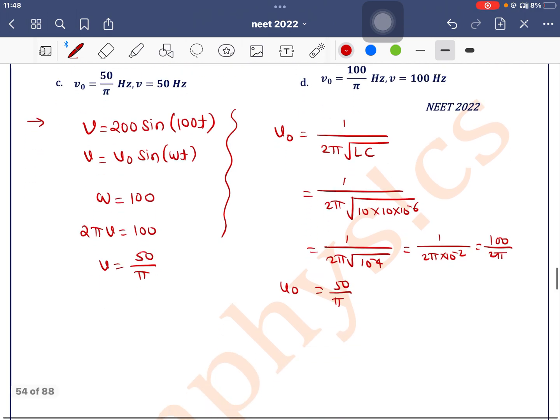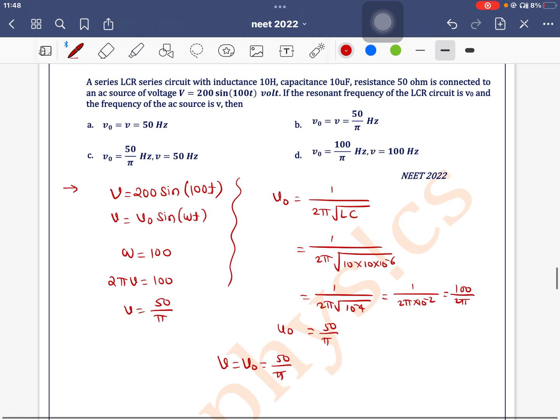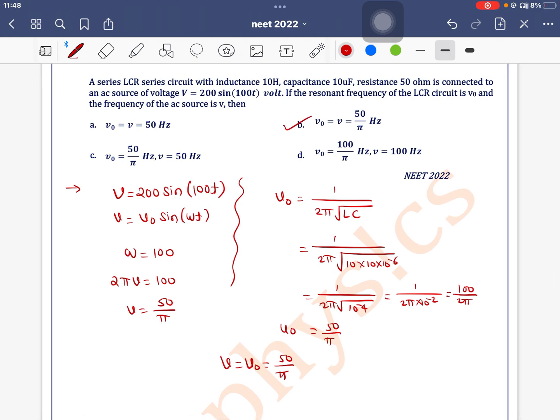The value of nu and nu0 both are the same, which is equal to 50 by pi. 50 by pi means option B is the correct one.